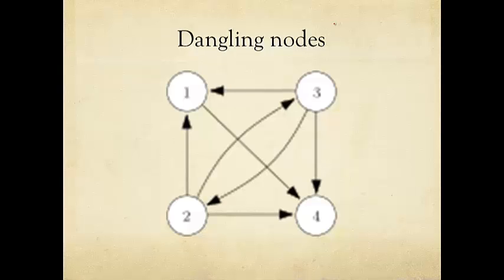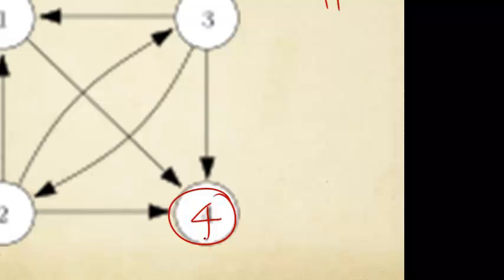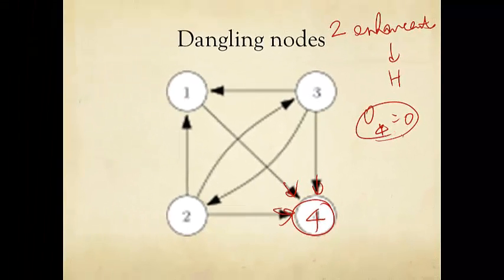We mentioned that there are two issues, two enhancements we'll provide to this matrix H. The first one goes back to the problem we just briefly alluded to: what if a node, say node 4 here, does not point to any other nodes? It has an in-degree of 3 but an out-degree of 0. So O4 is 0 — then what? Well, you can't divide by 0, and this presents a conceptual and mathematical challenge.